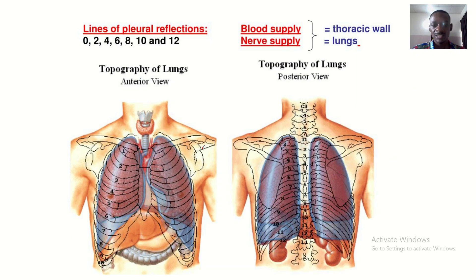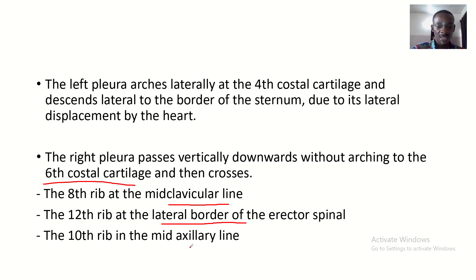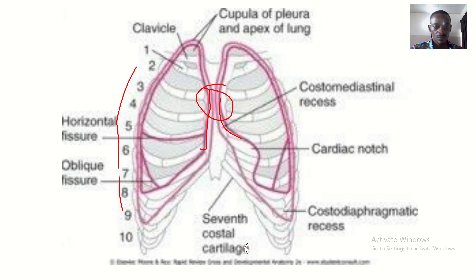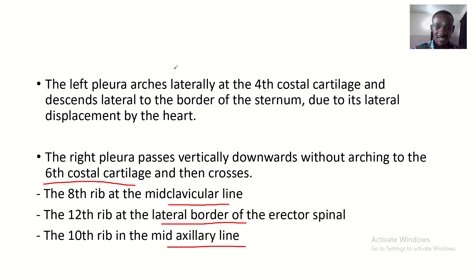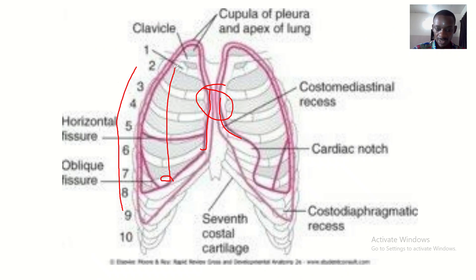After notching at the sixth costal cartilage, the pleura crosses the eighth rib at the mid-clavicular line, the tenth rib at the mid-axillary line, and the twelfth rib at the lateral border of the erector spinae. To confirm: the pleura crosses the eighth rib at the mid-clavicular line and the tenth rib at the mid-axillary line.